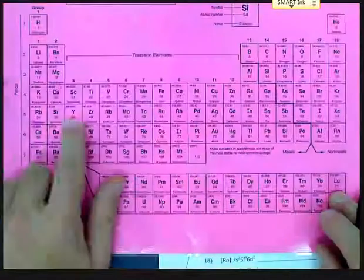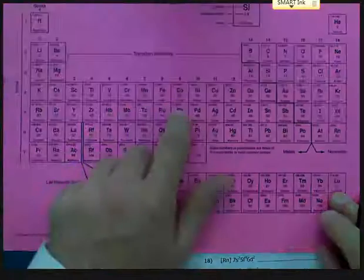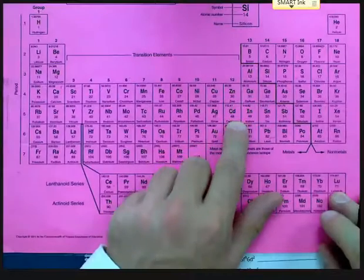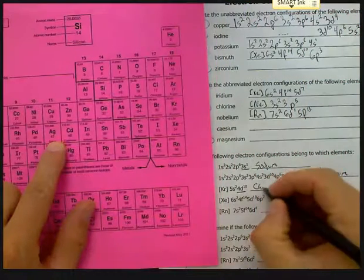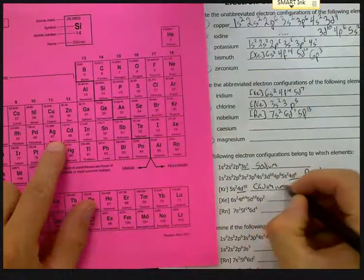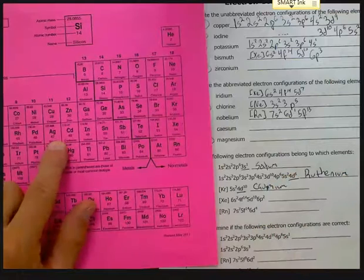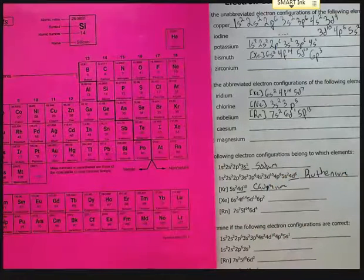Number 13 ends in 4d10. So back to the 4d-block, here's 4d, ten into it. We end up with cadmium. So that should be C-A-D-M-I-U-M.